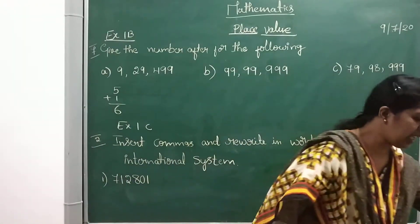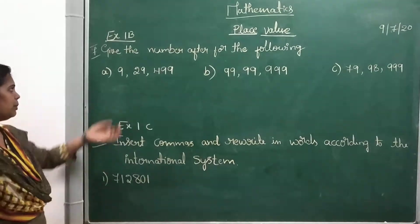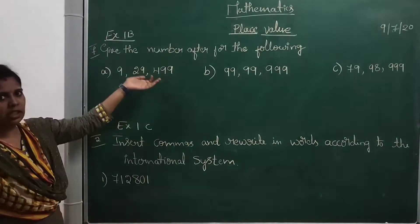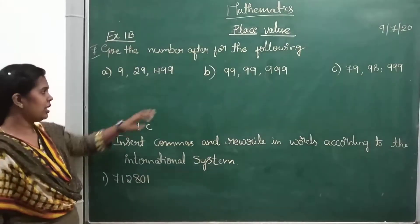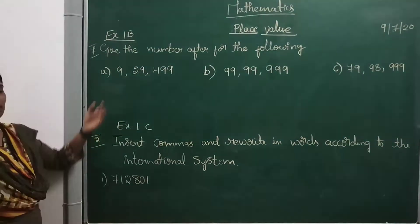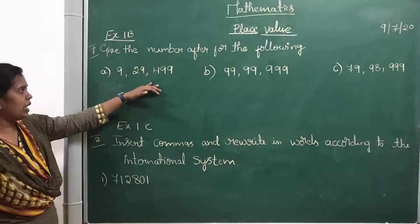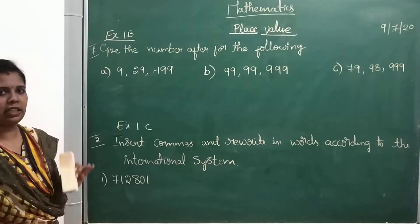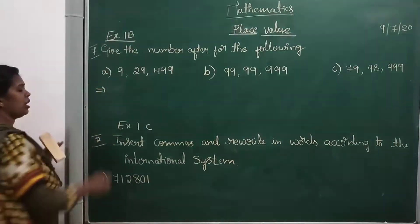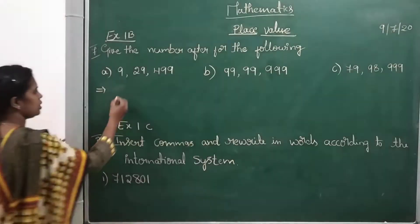Here also the same concept applies. We have to find the after number for a larger number. So here I have the number 9,29,499. We have to write the after number for this number. As we know, when we add 1 to any number we get the after number, so we will do the same here.